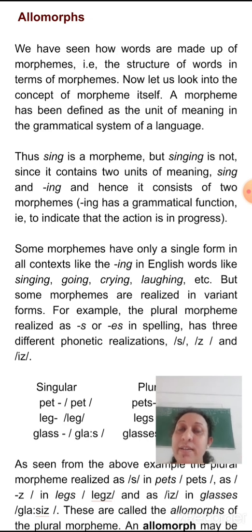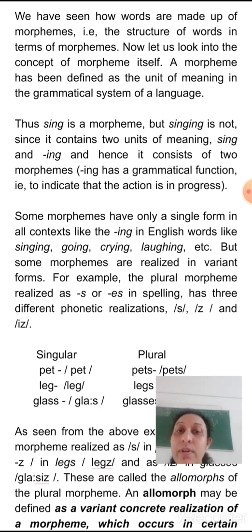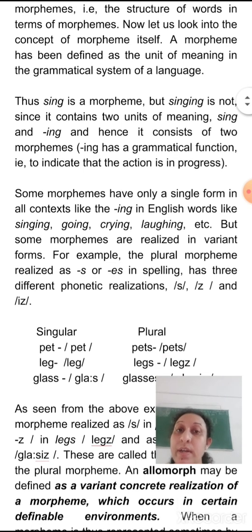'ing' has a grammatical function — it indicates the action is in progress. Some morphemes have only a single form in all contexts, like '-ing', as in 'singing', 'going', 'crying', 'laughing', etc. There is no change in their structure, pronunciation, or meaning.